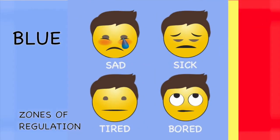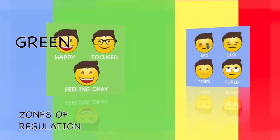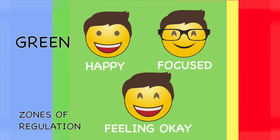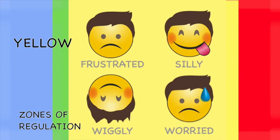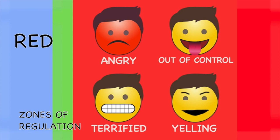In the blue zone, you are in a low state of alertness — still in control but with very low energy emotions. In the green zone, you're in a calm state of alertness — predominantly the state you want your child to be in for learning. In the yellow zone, you have a heightened sense of alertness but typically still have some control — you may be frustrated, anxious, or nervous, but could also be excited, silly, or hyper. The red zone is an extremely heightened state of intense emotions — when a person reaches the red zone, they are no longer able to control their emotions or reactions; this is the zone kids are in during meltdowns.